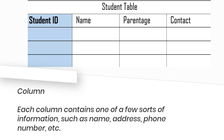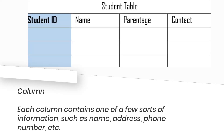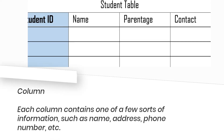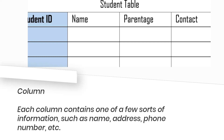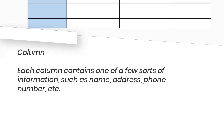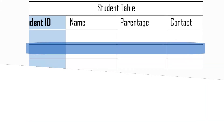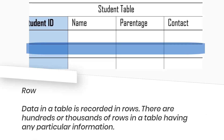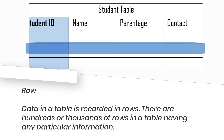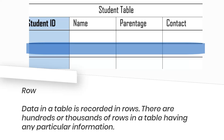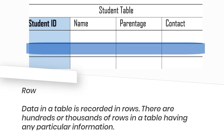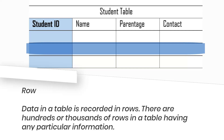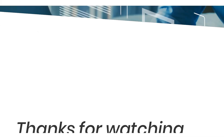Column: each column contains one of a few sorts of information, such as name, address, phone number, etc. Row: data in a table is recorded in rows. There are hundreds or thousands of rows in a table having any particular information.